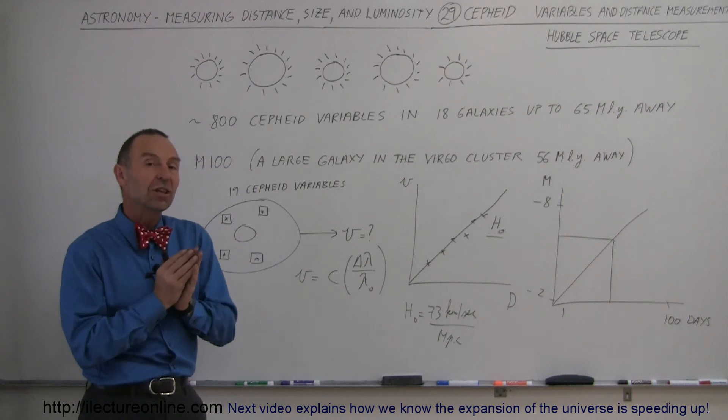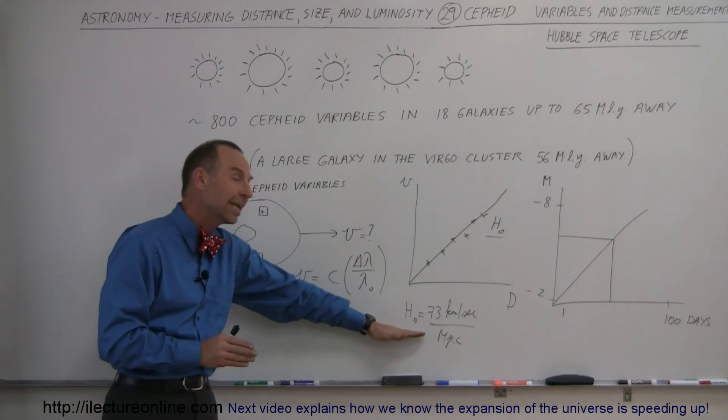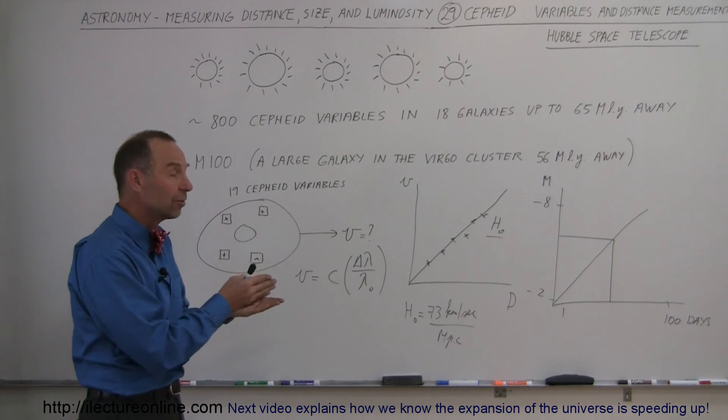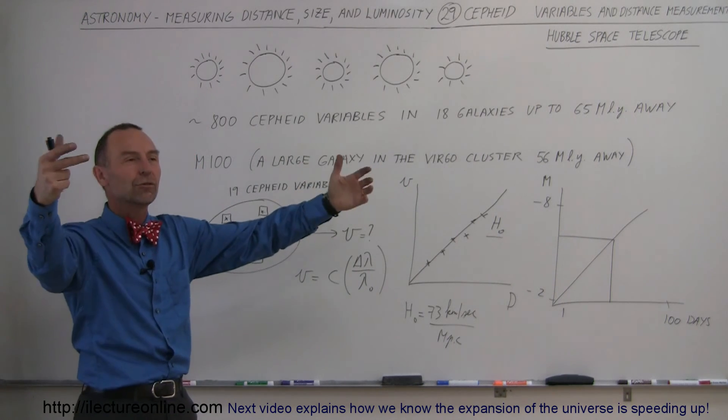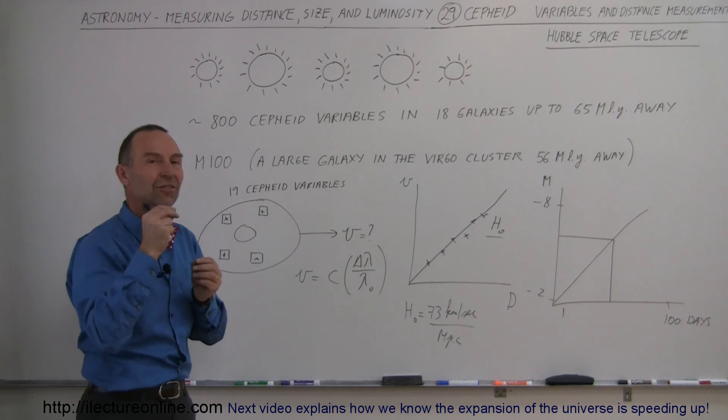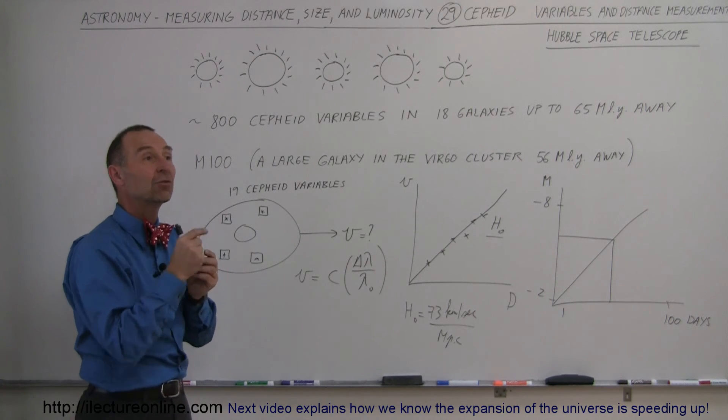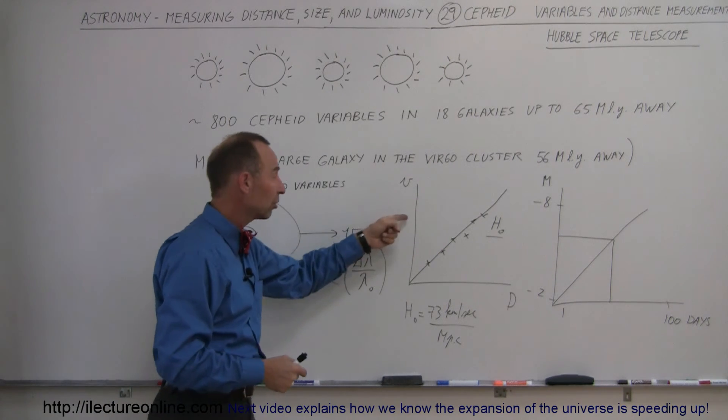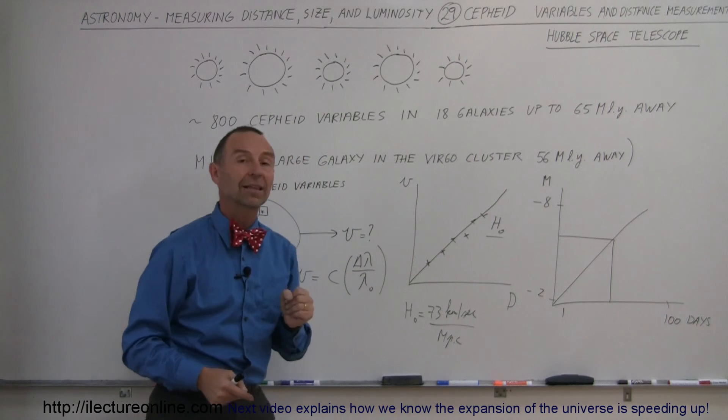It may still change a little bit, but we're getting closer and closer to the exact value. Remember, once we know the Hubble constant, we can then look at any galaxy in the universe, measure its distance by measuring its recessional velocity, putting it on this curve, and then finding the distance to that galaxy.